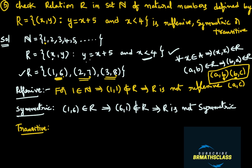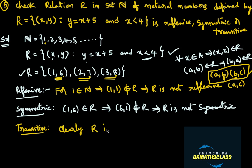We are unable to find a pair of the form (a, b) and (b, c). This may seem controversial, but if we are unable to find such a pair of ordered pairs, then we say that the relation is transitive. So R is a transitive relation. The given relation R is not reflexive, not symmetric, and it is transitive.